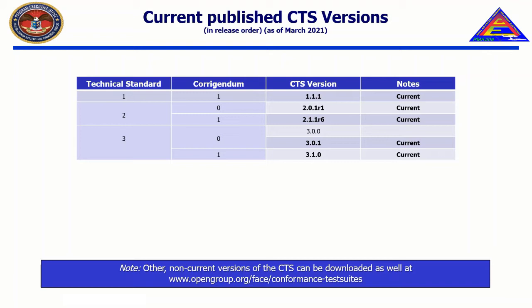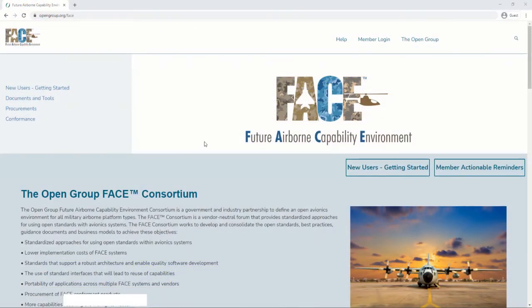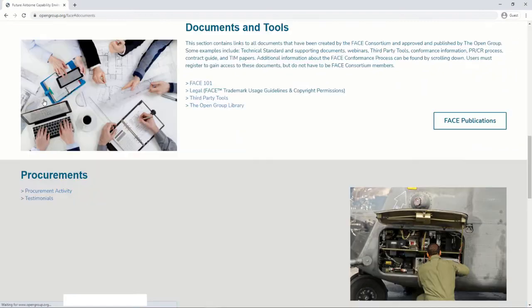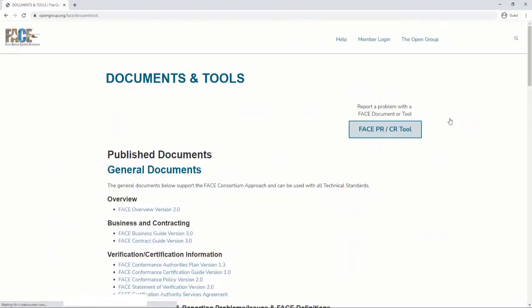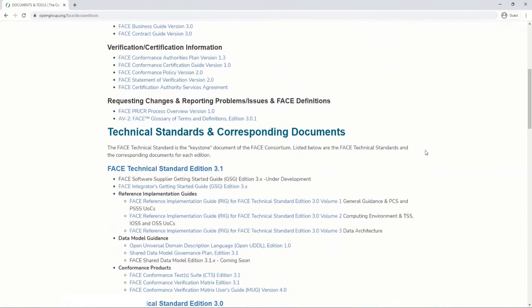There are multiple versions of the CTS, as shown. The CTS corresponds to a major version number and core agendum version number of the Phase Technical Standard. For example, for Phase Technical Standard 3.0, the CTS is named CTS 3.0. This is then followed by an update number, starting at 0, meaning initial release, and incrementing by 1 for each public release to the Phase Consortium. The most up-to-date released versions of the CTS are found on www.opengroup.org/face/documents-and-tools/face-publications/conformance-test-suites.